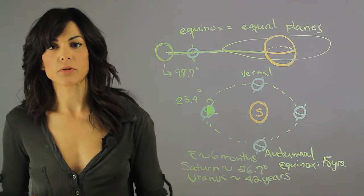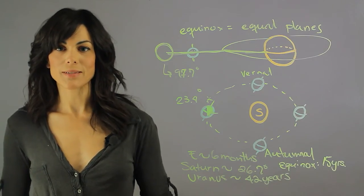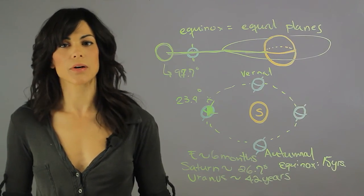And these are some of the extreme examples that we have here in the solar system about equinoxes. My name is Aileen Perez, and I'm an astrophysicist, and this is the Equinox of Planets.